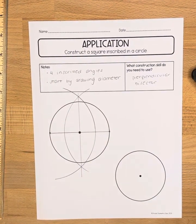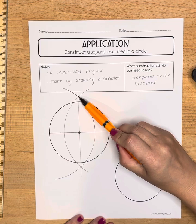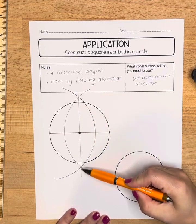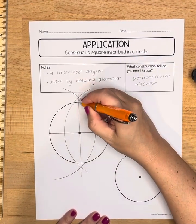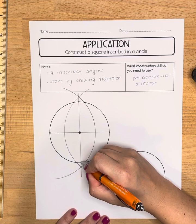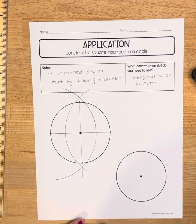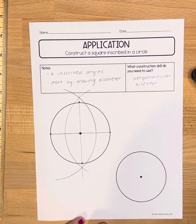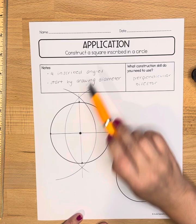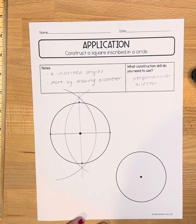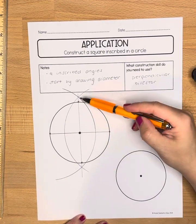And now here's the part where sometimes people make mistakes. We are not looking for this intersection. We are not looking for this one. We're looking for where the perpendicular bisector actually crossed the circle because remember if these are inscribed angles, the vertex of each of these angles has to be on the circle, not outside of it.